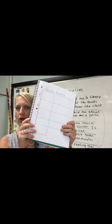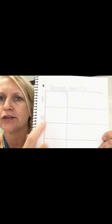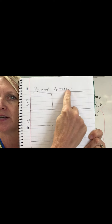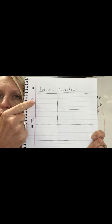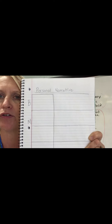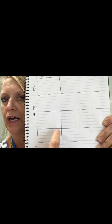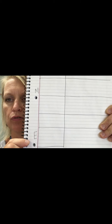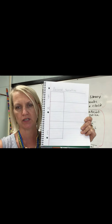This is the spiral notebook. Use your pencil and write 'personal narrative' at the top. Feel free to pause the video so you can draw the lines. You're going to make one box for beginning with a section to write down your notes, three boxes for the middle with a section for notes, and one box for the end with a little section for notes. Use this to plan your personal narrative.